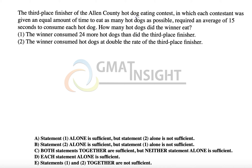The third place finisher of the Allen County hot dog eating contest — in which each contestant was given an equal amount of time to eat as many hot dogs as possible — required an average of 15 seconds to consume each hot dog. The third place finisher gets an average of 15 seconds per hot dog. How many hot dogs did the winner eat?